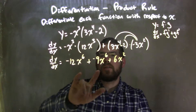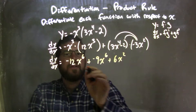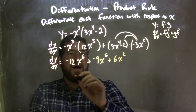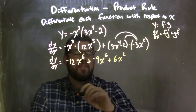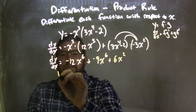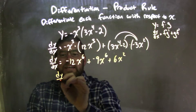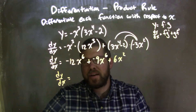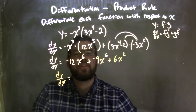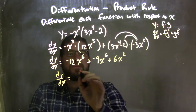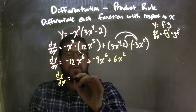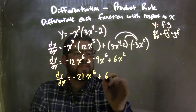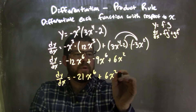Now I can simplify this and combine my like terms. So let's combine the negative 12x to the sixth and negative 9x to the sixth. So we have dy/dx here: negative 12x to the sixth plus negative 9x to the sixth comes out to negative 21x to the sixth, plus...